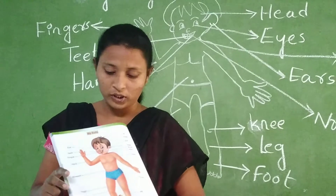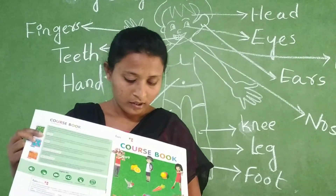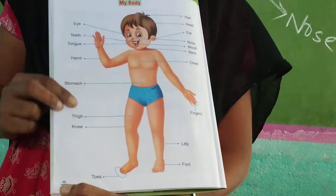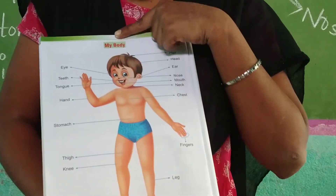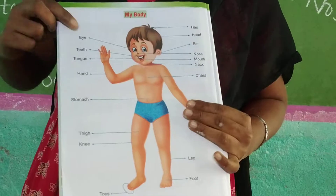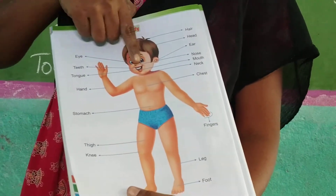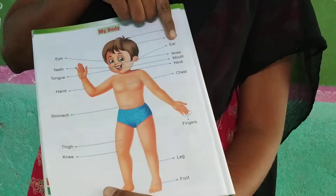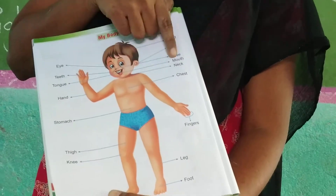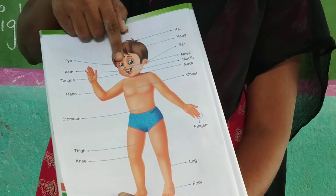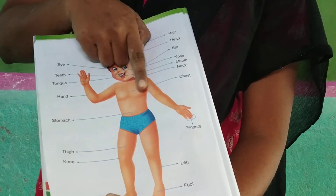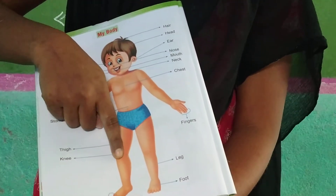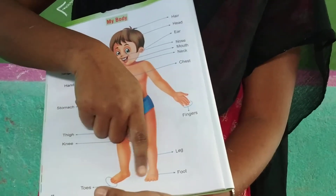Now open your textbook, children. Open your course book, Term 1, page number 48. Now see here — this is our lesson: My Body. He is showing eyes, teeth, tongue, head, ear, nose, mouth, neck, hand, chest, stomach, thigh, knee, leg, foot, toes.